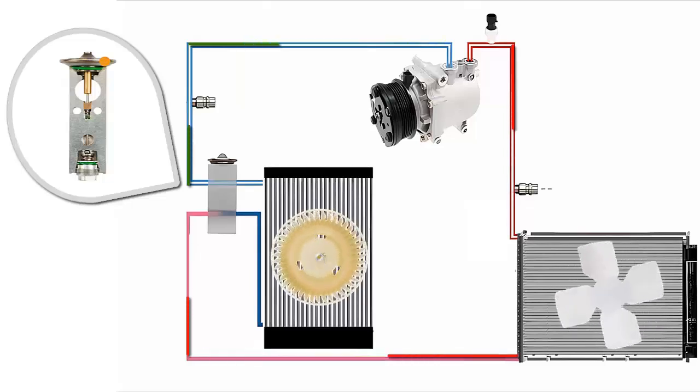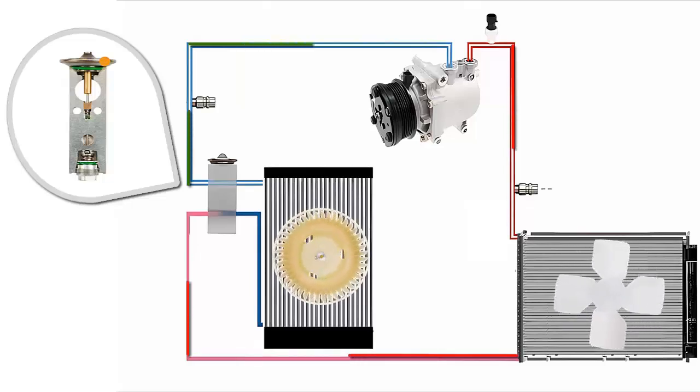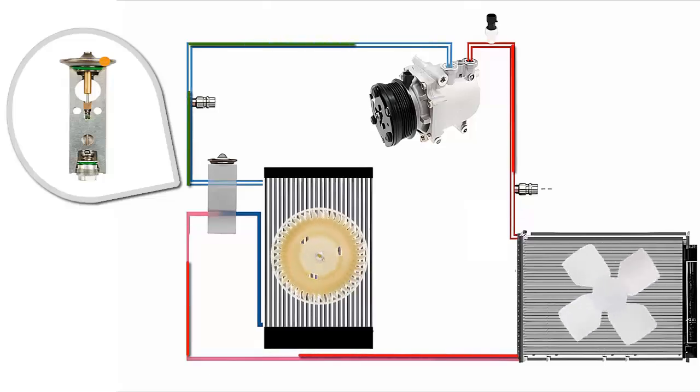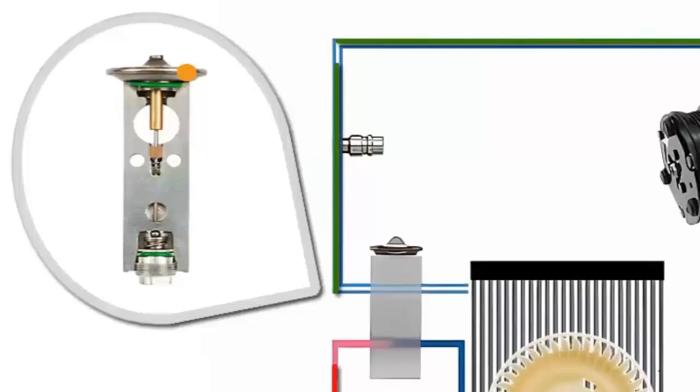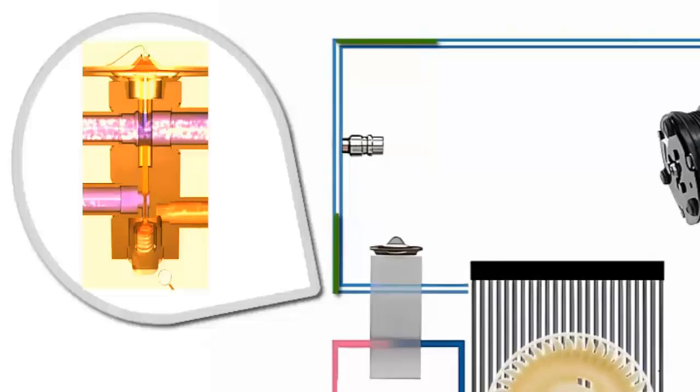In this video, we will explain in detail the operation and failures of the block-type thermostatic expansion valve in automotive air conditioning systems. This component is crucial as it regulates the refrigerant flow to the evaporator, ensuring efficient cooling and the necessary pressures for optimal system operation.